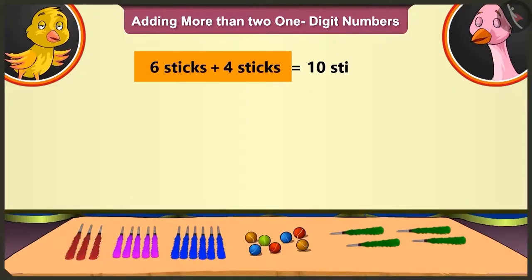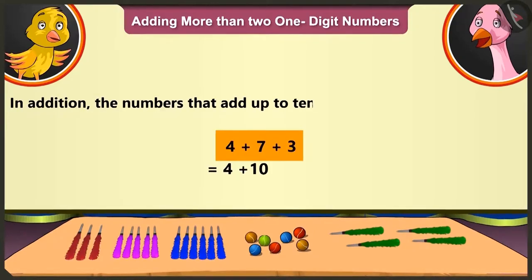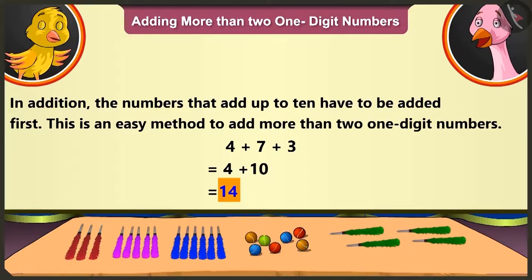This means that those numbers which add up to ten have to be added first. You got it right, Pillu. As per the concept of addition, the numbers that add up to ten have to be added first. This is an easy method to add more than two one-digit numbers.